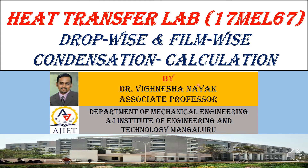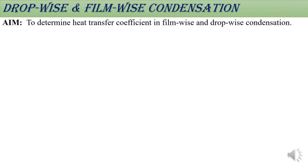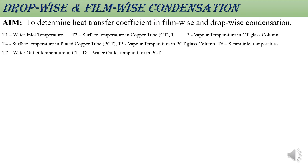Next experiment for heat transfer lab is drop-wise and film-wise ice condensation. The experiment part is already over; now we will see the calculation part. The objective is to find out the heat transfer coefficient in film-wise and drop-wise condensation. Condensation means the change of phase from vapor to liquid, during which liquid droplets form at constant temperature during saturation. The liquid droplets either form in droplet form or in continuous form on the surface of the tube.